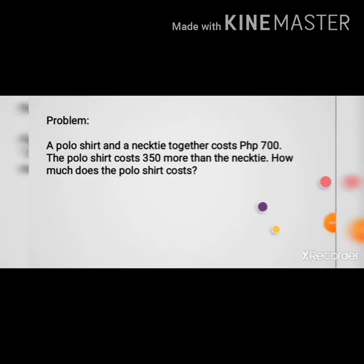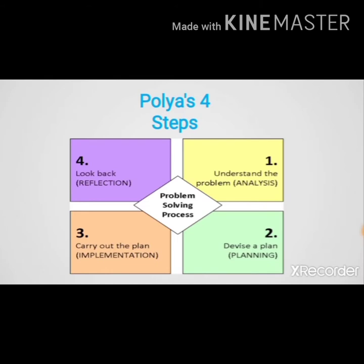So the problem is: a polo shirt and a necktie together cost 700 pesos. The polo shirt costs 350 more than the necktie. How much does the polo shirt cost? So to answer this problem, we will use Polya's four steps in problem solving.